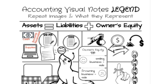Next up, we have supplies and prepaid insurance. All of those are things of value that the business owns. Next up, we have accounts payable under liabilities. This is where we have purchased something but have not yet paid for it — it's an IOU, a bill that we need to pay to another business. Those are all represented by accounts payable accounts.